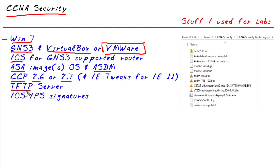The TFTP software is really convenient if we need to move files back and forth — for example, between our local hard drive and the flash drive on our virtual ASA. We'd also want the iOS IPS signatures that are part of iOS-based IPS, as well as the public key file from Cisco that allows us to validate the signature package before we install it as part of an iOS-based IPS solution.